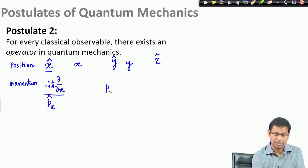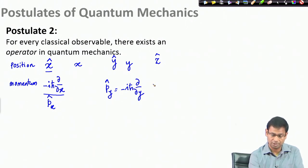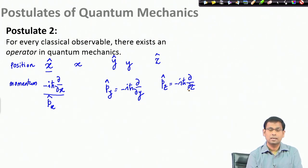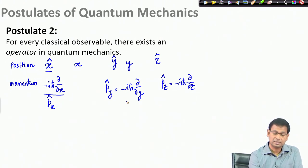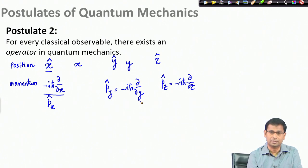Similarly, p-hat_y is minus i h-bar times the partial derivative with respect to y, and p-hat_z is minus i h-bar times d/dz. The reason I am using partial derivatives is that p_y differentiates the function only along the y direction, but the function may have dependence on x and z. If your function has only one dimension, then the partial derivative becomes a normal derivative.